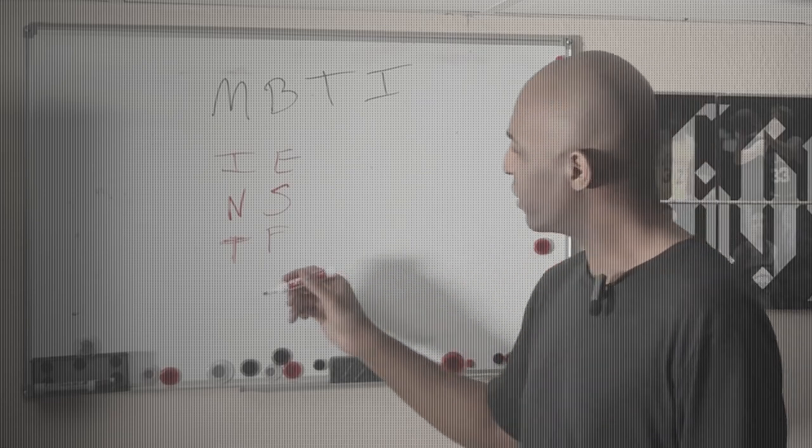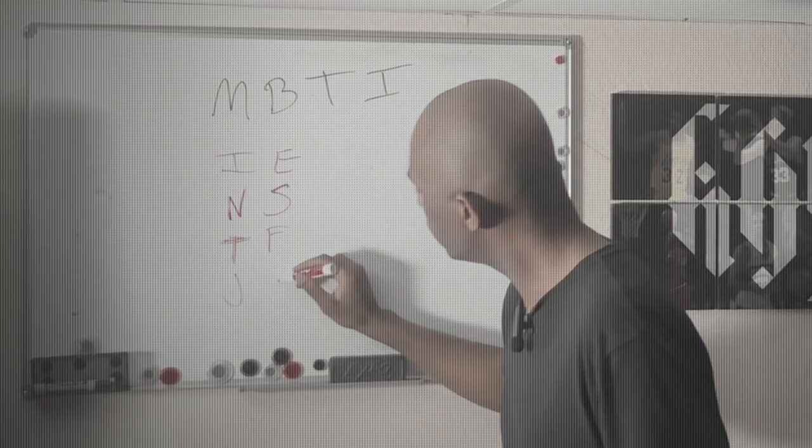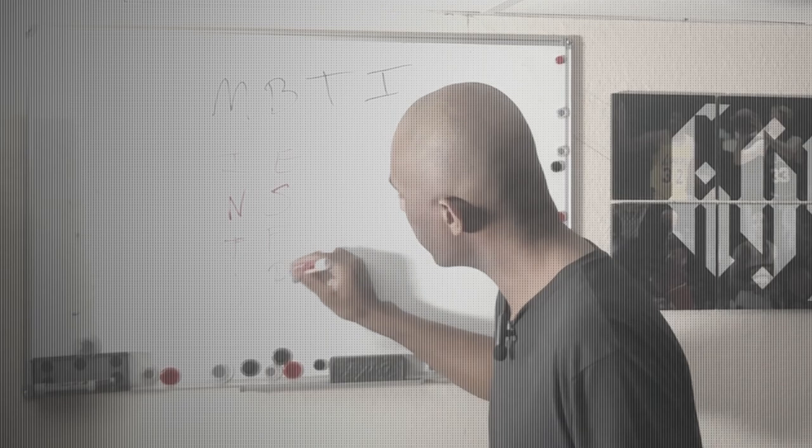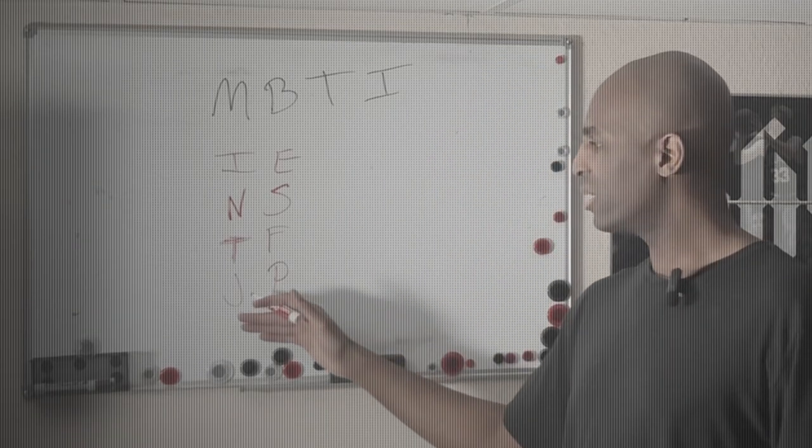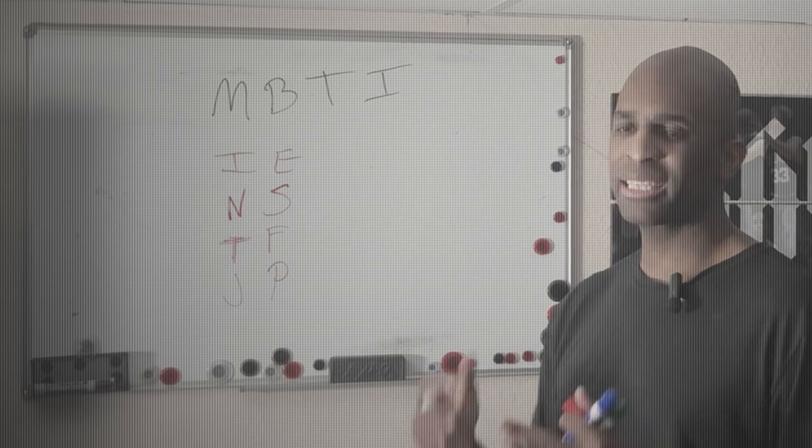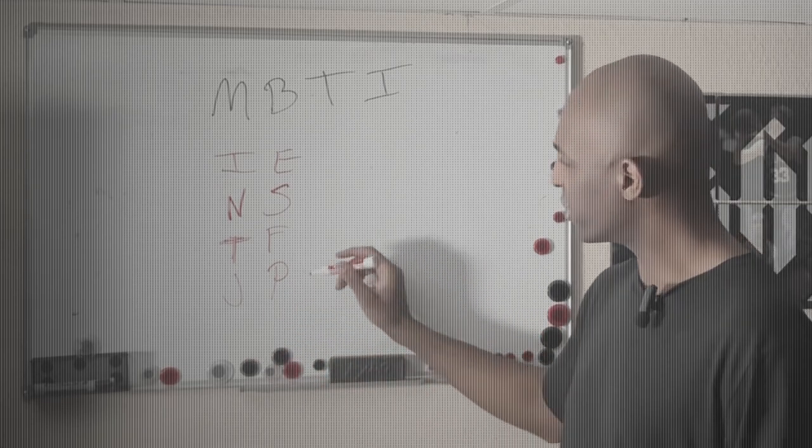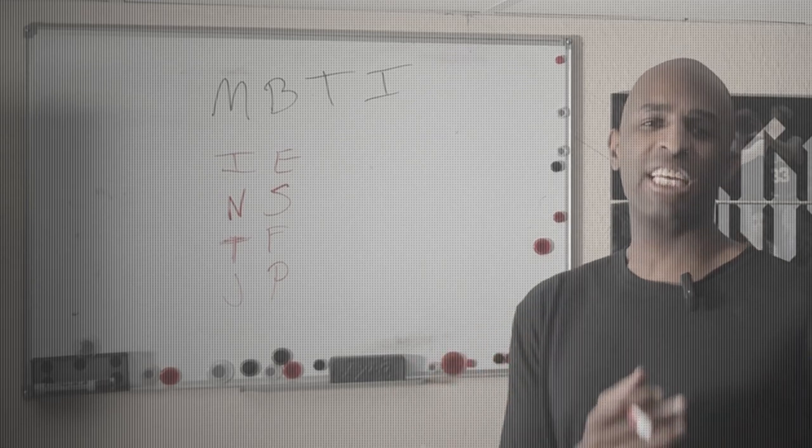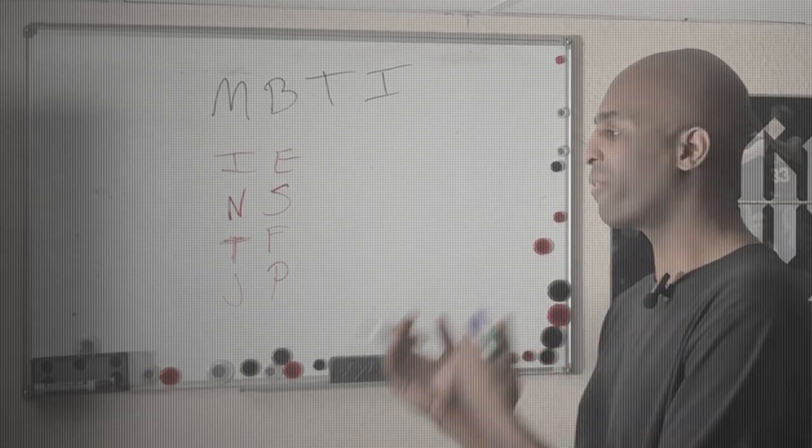The last one is J or P. J is a very organized person, the people that like to plan things out, versus P, a very spontaneous person, the person that just goes with the flow.